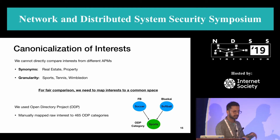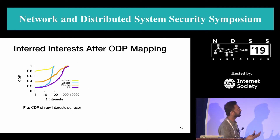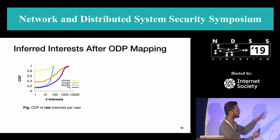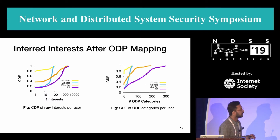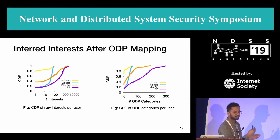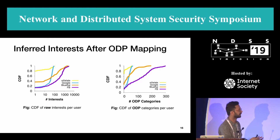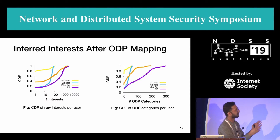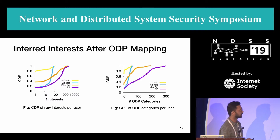Now that we have this mapping to a common space, we can check whether it affects the picture I showed earlier. If I plot the CDF of ODP categories, you can still see that the magnitude has reduced, but Facebook still has the largest amount of profile about the user. The Google and BlueKai lines have come closer together, but the overall trend remains the same across both graphs.